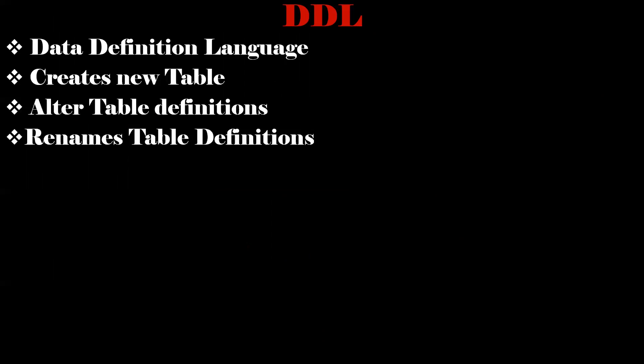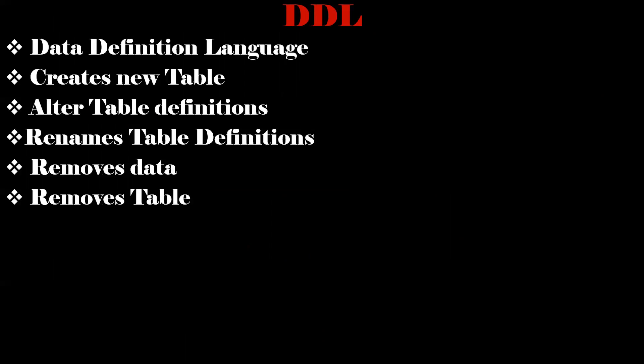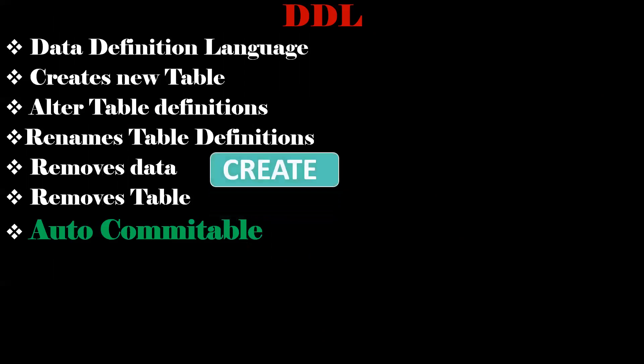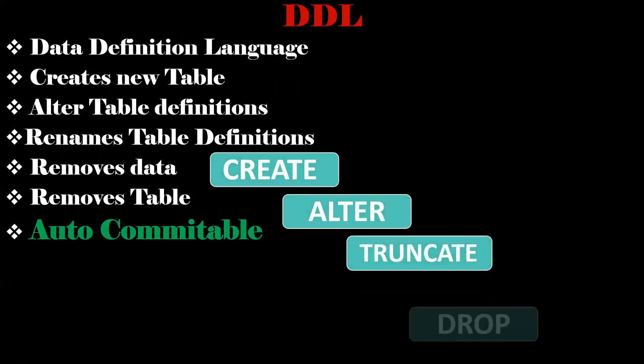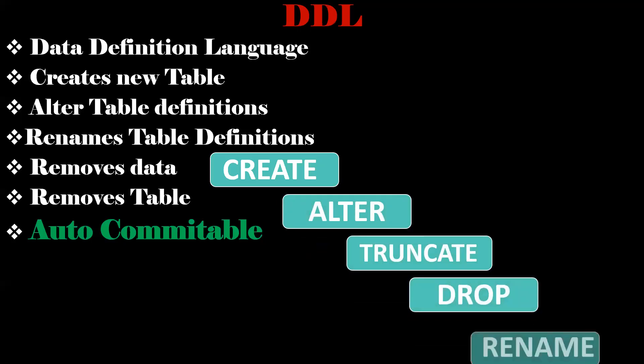Next is DDL, data definition language. By using these commands, we can create a new table, alter the table definition, rename a table, remove data from a table, and remove the table from the entire database. DDL commands are auto-committable. In DDL, we have five commands: create, alter, truncate, drop, and rename.